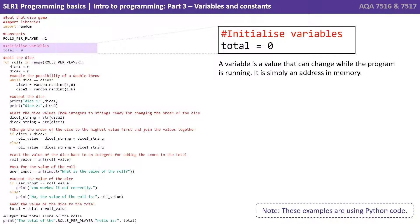So here we see a variable. A variable is a value that can change or vary, hence the name, while the program is running. It is simply an address in memory. So the line of code total equals zero carves up a piece of memory, assigns the integer value zero to it, and gives that piece of memory the label total so we can access that memory location.